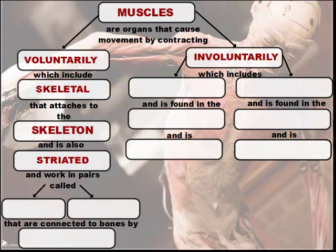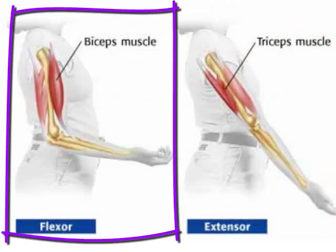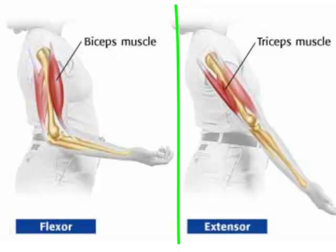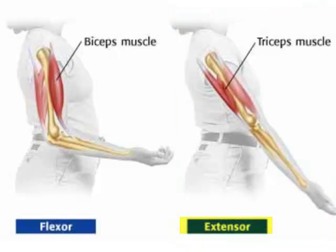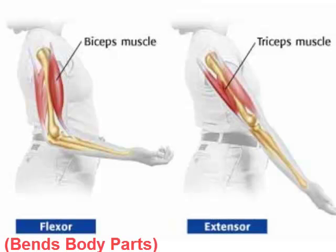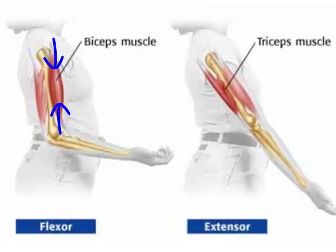Your muscles work in pairs because muscles can't contract and then relax themselves. So we have pairs called flexors and extensors. Here on the left, I have my flexor muscle, which is the bicep muscle, and on the right, my extensor muscle, which is the triceps. Flexor muscles are muscles that bend body parts. As you can see, the bicep muscle contracts and gets shorter, pulling on the tendon attached to your forearm, pulling the forearm up.